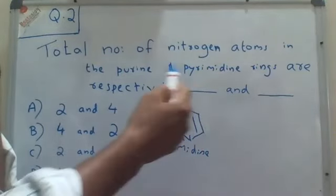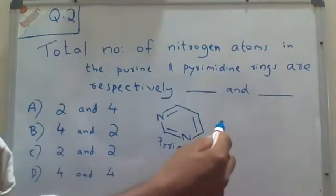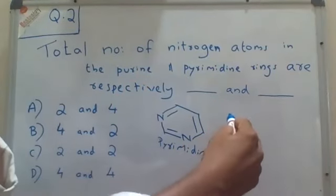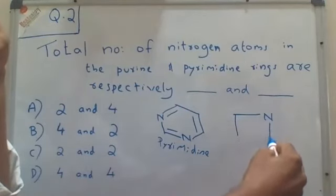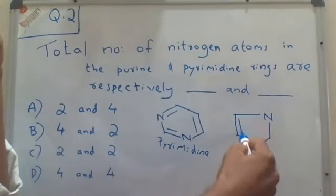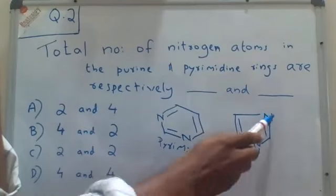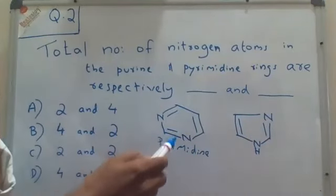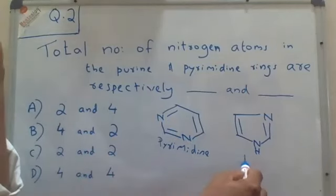Now, to know the structure of purine, we should know one more heterocyclic ring and that is called as imidazole. So this is a five-membered ring with two nitrogen atoms at the alternative positions.